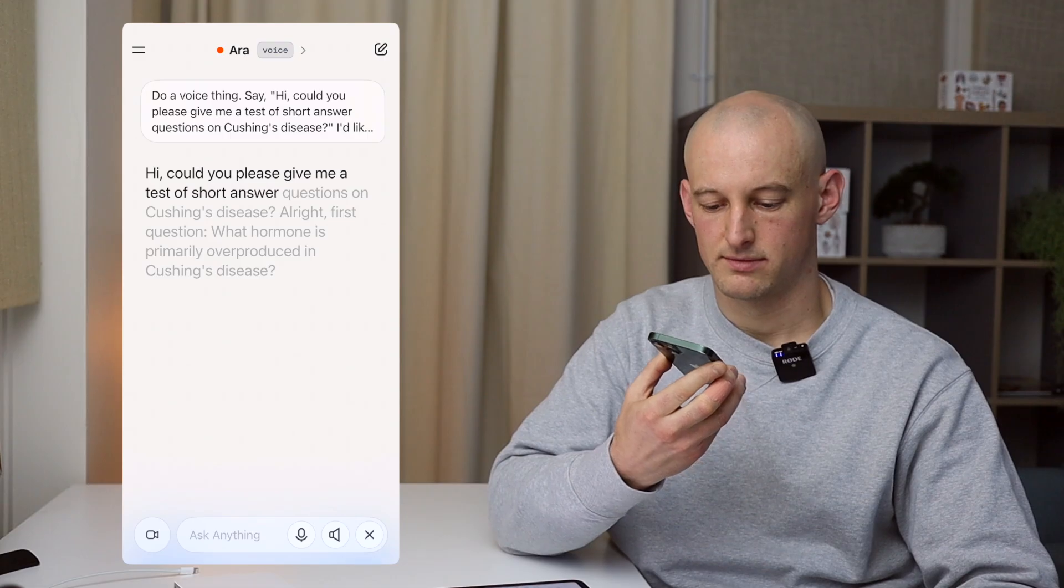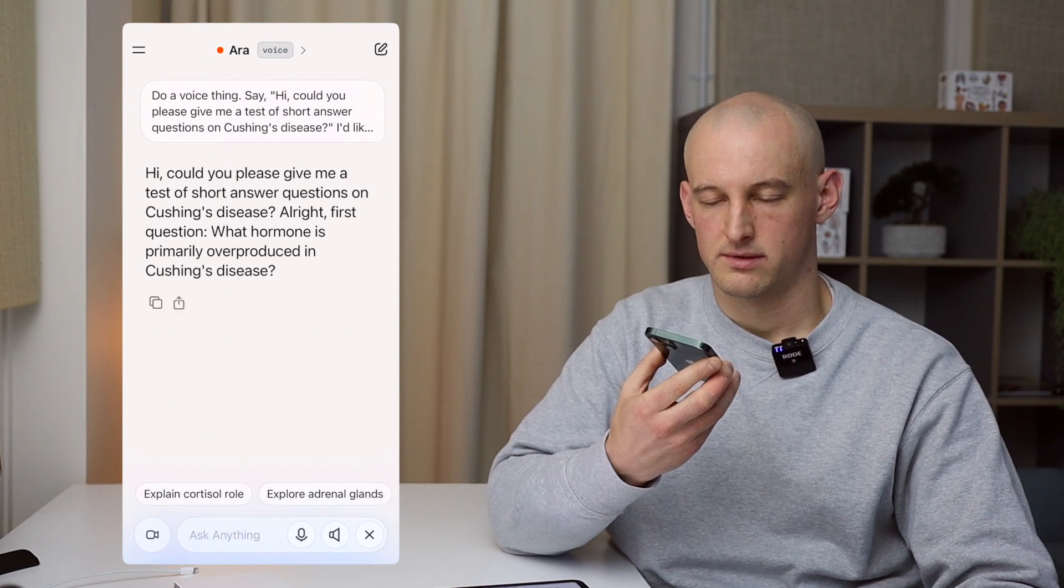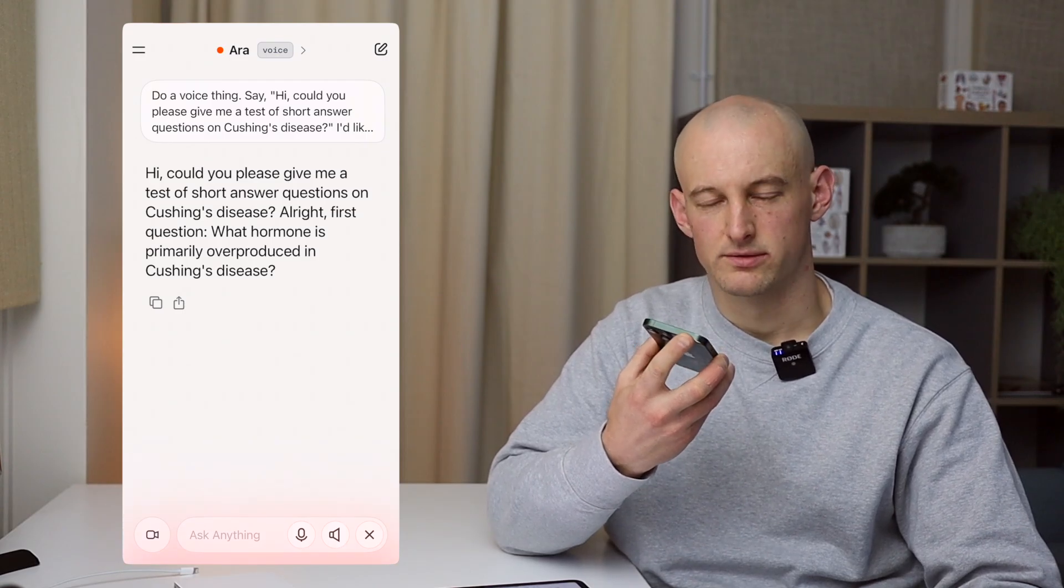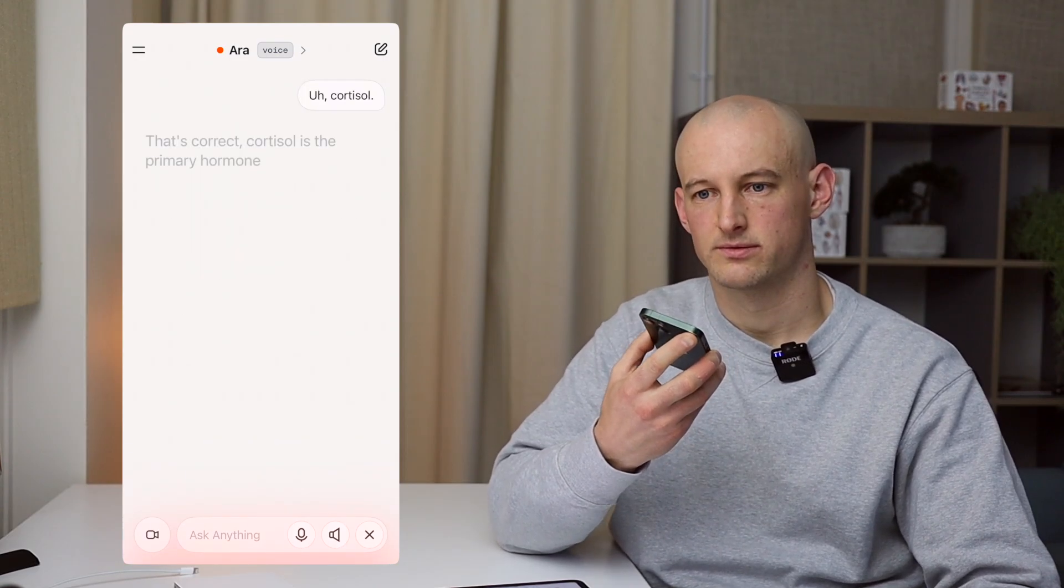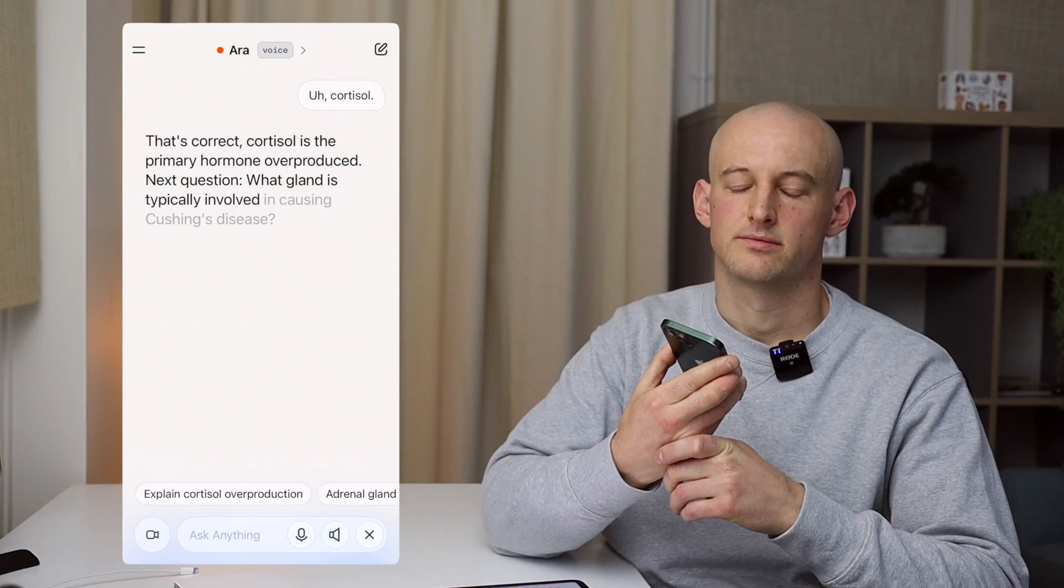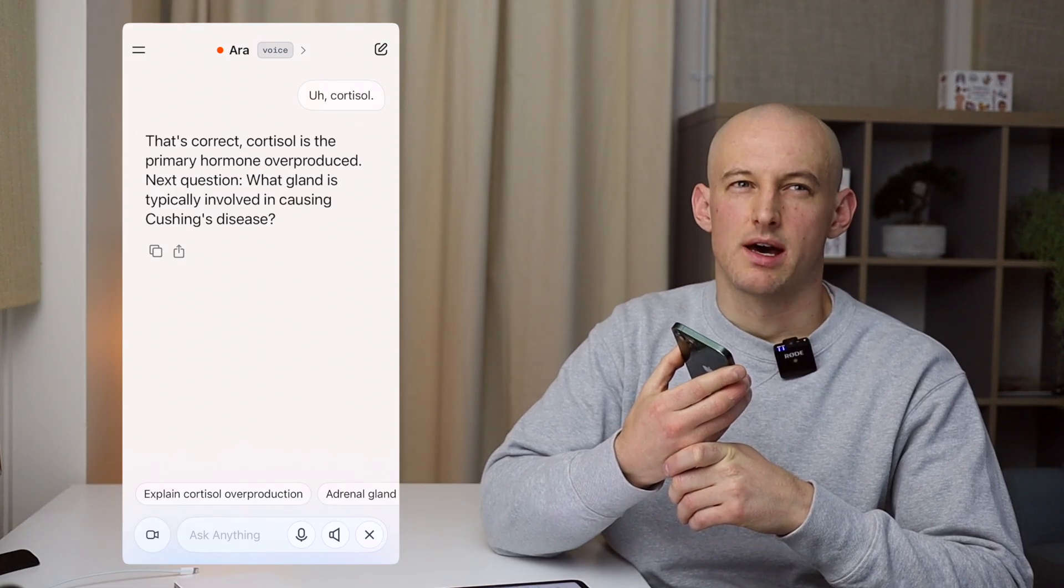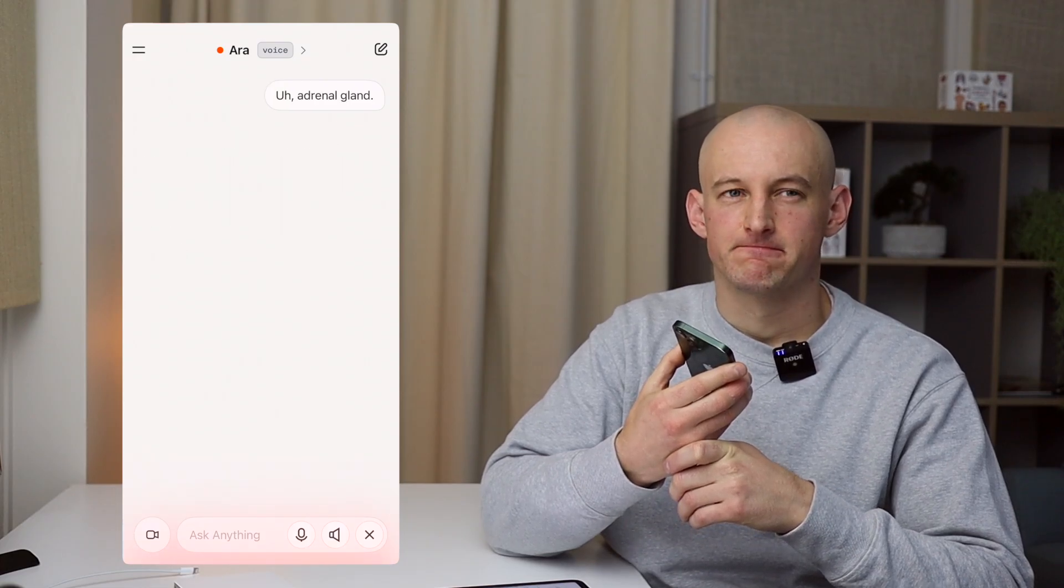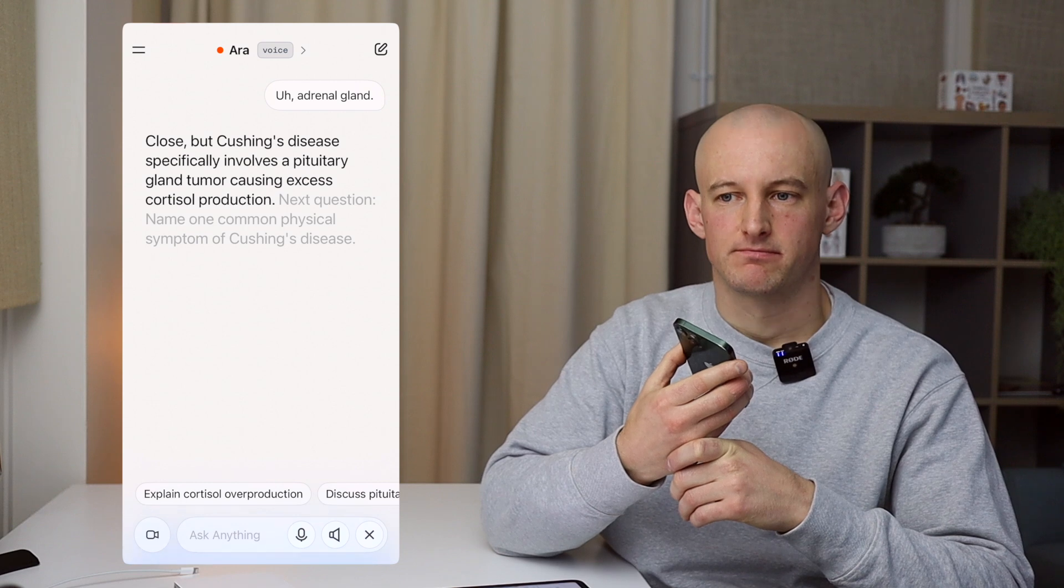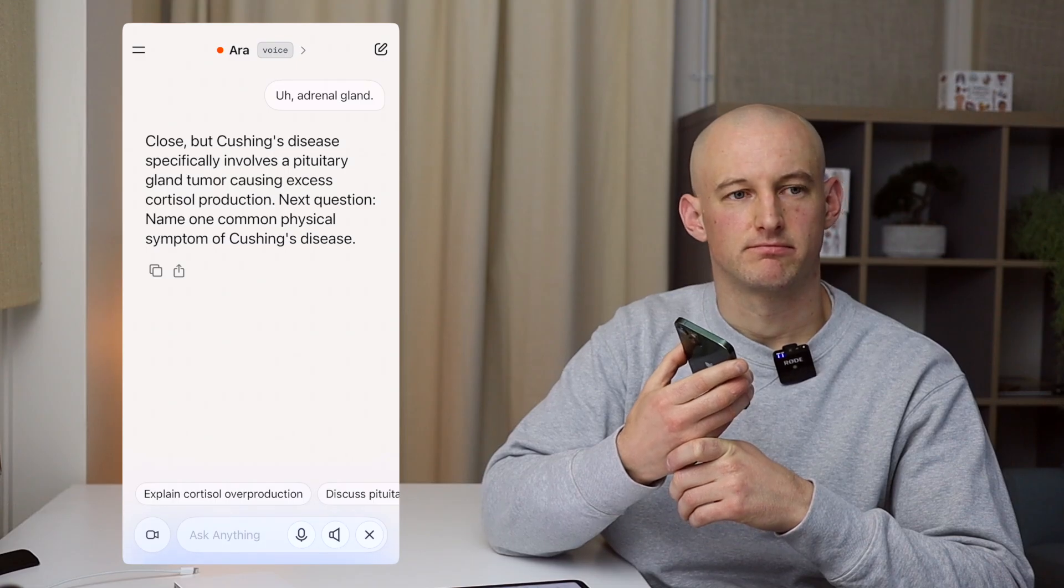Hi, could you please give me a test of short answer questions on Cushing's disease? All right. First question. What hormone is primarily overproduced in Cushing's disease? Cortisol. That's correct. Cortisol is the primary hormone overproduced. Next question. What gland is typically involved in causing Cushing's disease? Adrenal gland.